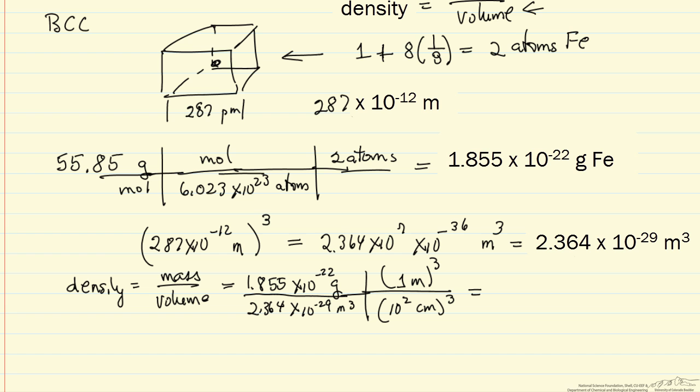Now if we do this multiplication, meters cubed cancel and we're going to have grams per cubic centimeter. Notice again that I've tried to be careful with my exponents here, giving 7.86 grams per cubic centimeter.